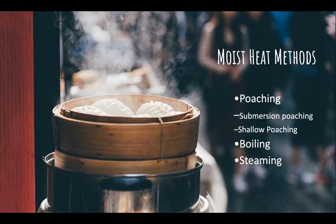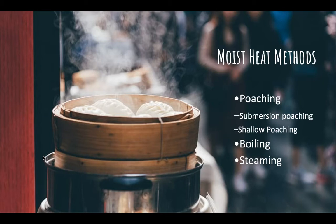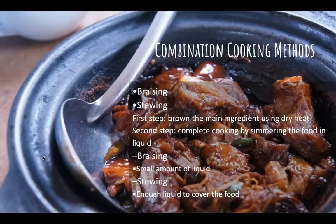Moist heat methods include poaching — either submerged poaching like poaching an egg, or shallow poaching for fish where you don't need to completely submerge the protein. For poaching, imagine a jacuzzi with the jets off — you want to see some bubbles forming on the edges but no active bubbles on the surface. Higher temperatures with active bubbles indicate simmering or boiling. Steaming is another moist heat method.